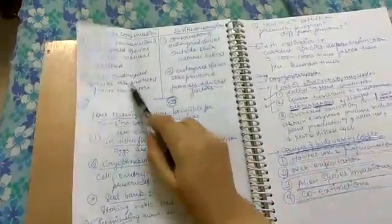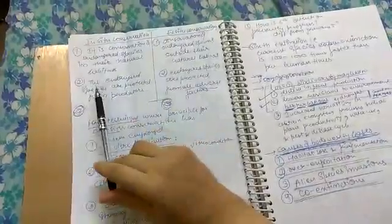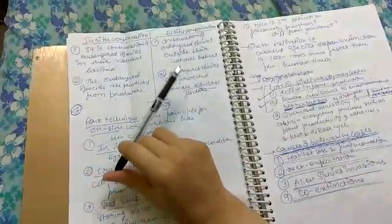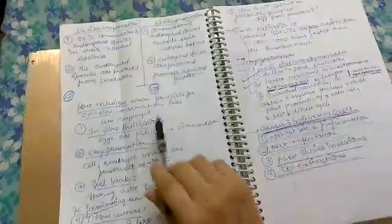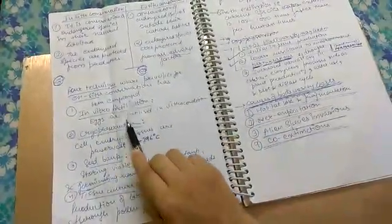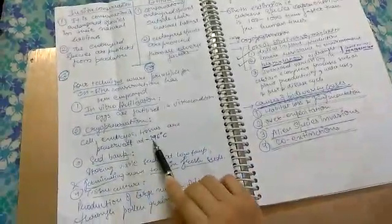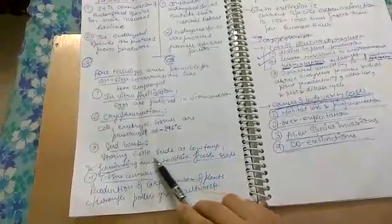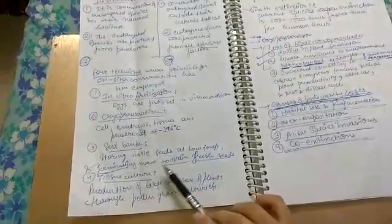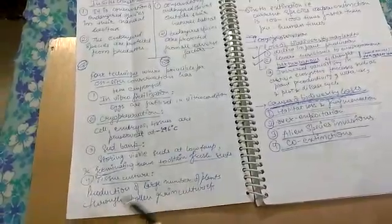Next is in-situ conservation versus ex-situ difference. It is conservation of endangered species in natural habitat versus outside natural habitat. Endangered species are protected from predators and all adverse factors. Four techniques where principle of ex-situ conservation has been used: in vitro fertilization where eggs are fertilized in vitro, cryopreservation where cells and embryo tissues are preserved at minus 196 degrees Celsius, seed banks storing viable seeds at low temperatures and germinating them to obtain fresh seeds, and tissue culture for production of large number of plants through pollen grain culture.